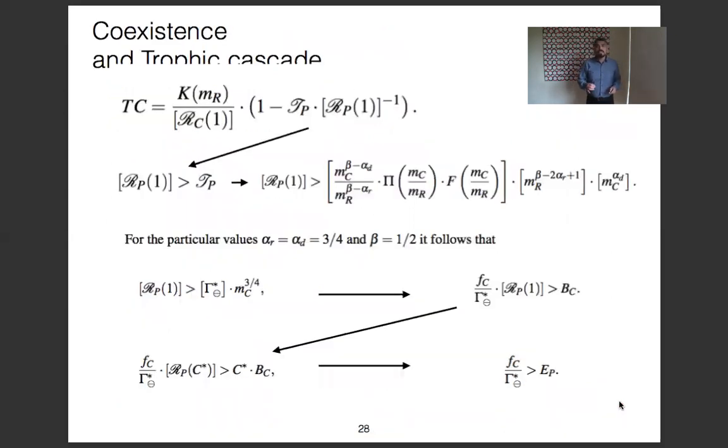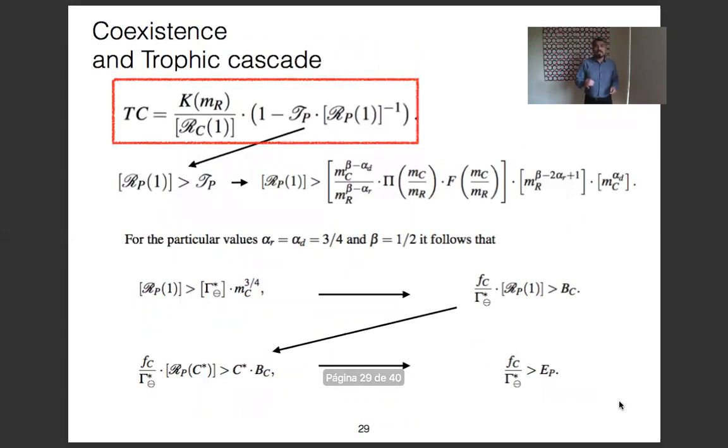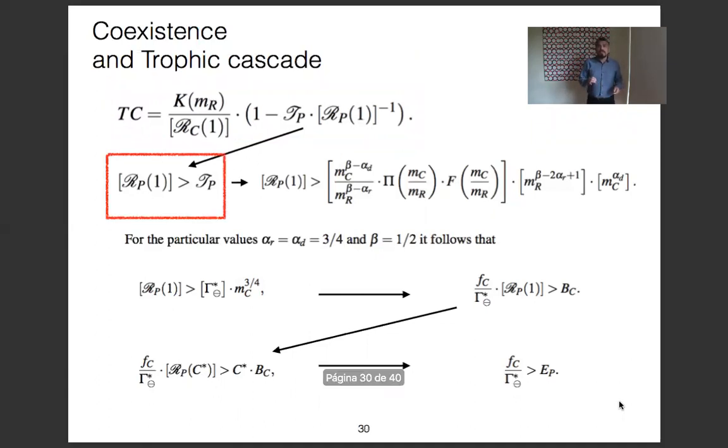The model that represents the intensity of the trophic cascade is expressed in terms of carrying capacity of the basal resource, the reproductive number of consumer and predator, and threshold number of trophic cascade. Note that for this term being positive, it is required that the number of offspring left by predator Rp must be greater than threshold Tp. In terms of body mass, the following inequality is obtained.